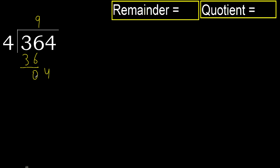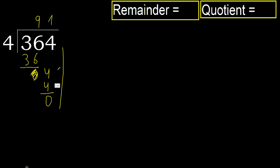Next, bring down 4. 4 multiplied by 1 is 4, which is not greater. Subtract. That is not a number, therefore finish it.